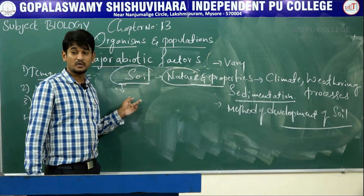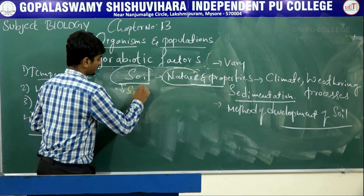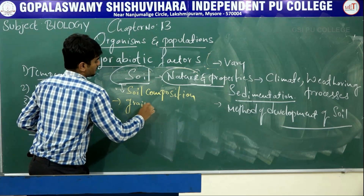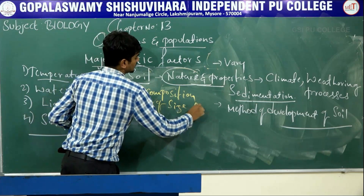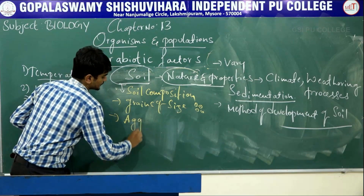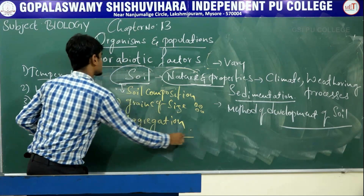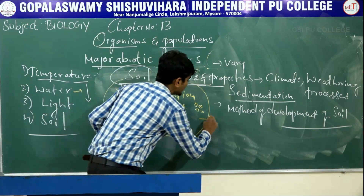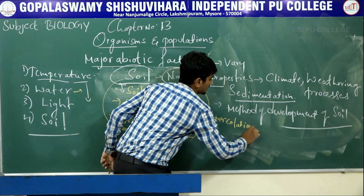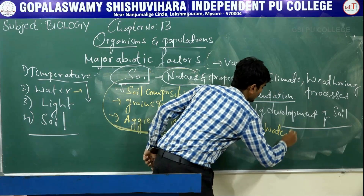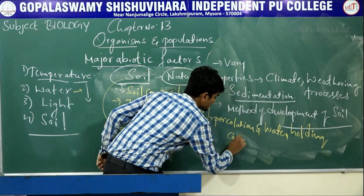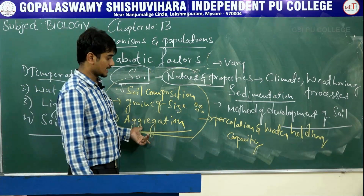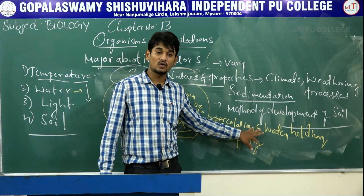Soil shows various characteristics: soil composition, grain size, and aggregation. These determine the percolation and water holding capacity of the soil. These characteristics together — soil composition, grain size, and aggregation — determine how water moves through and is held by the soil.